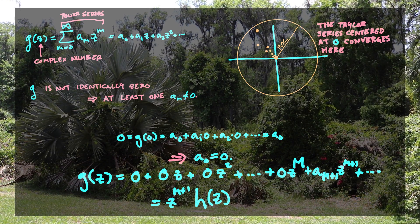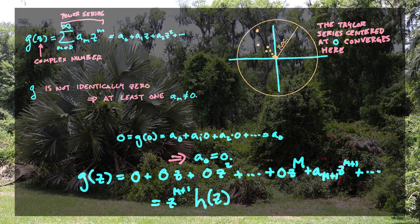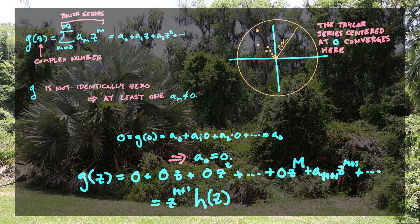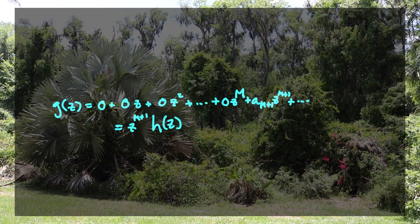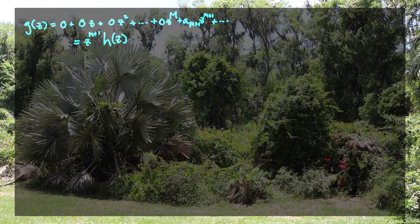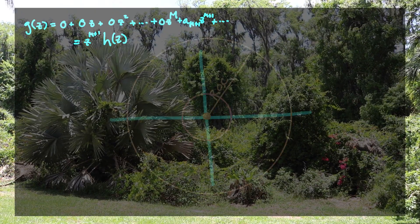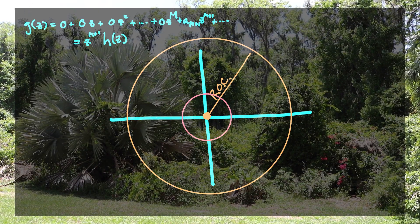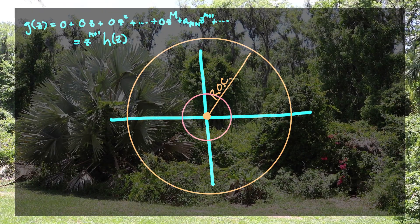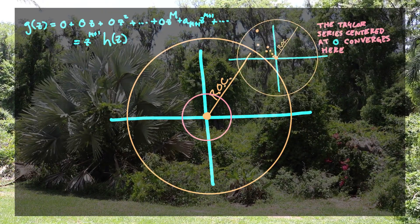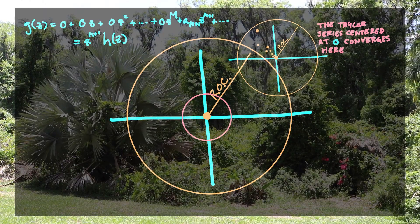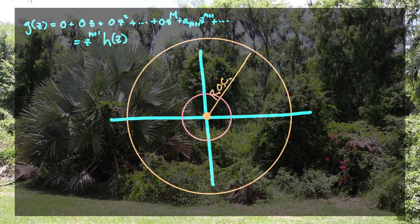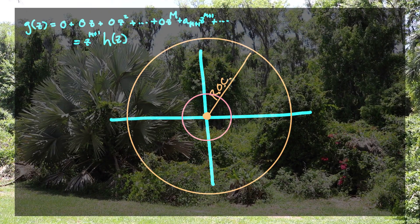We're going to take a look at this function H, which we know is non-zero at the origin. As established before, if we have an analytic function that is non-zero somewhere inside of the radius of convergence — and H has the same radius of convergence as G — then H is going to be non-vanishing, or non-zero, in an immediate neighborhood of that point. And this is a problem. Remember, we have a sequence of points converging to the origin where G was zero, and now we're writing G as Z^(M+1) times H(Z). H(Z) is going to be non-zero in some local neighborhood of our origin.